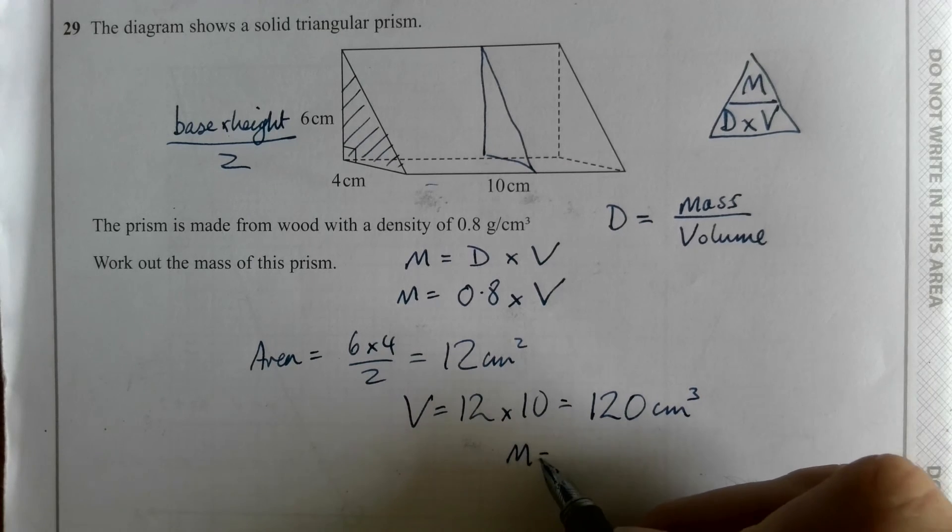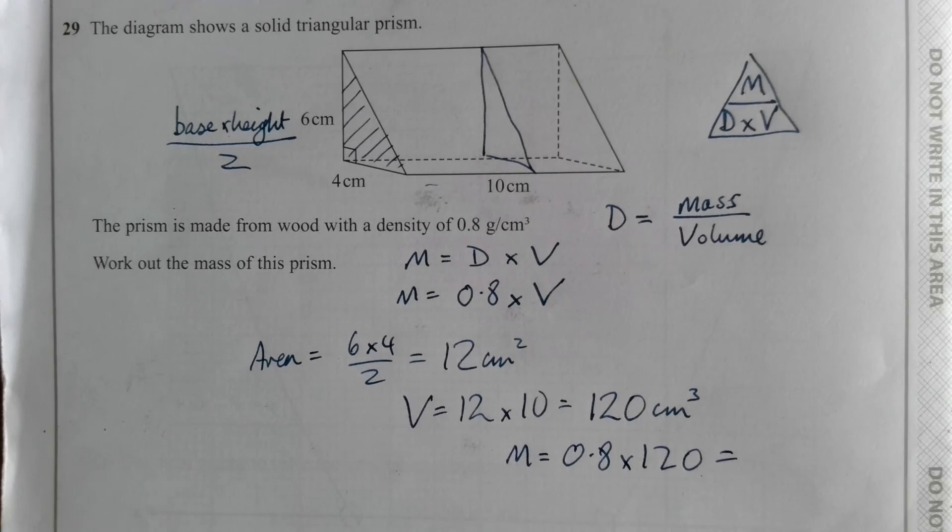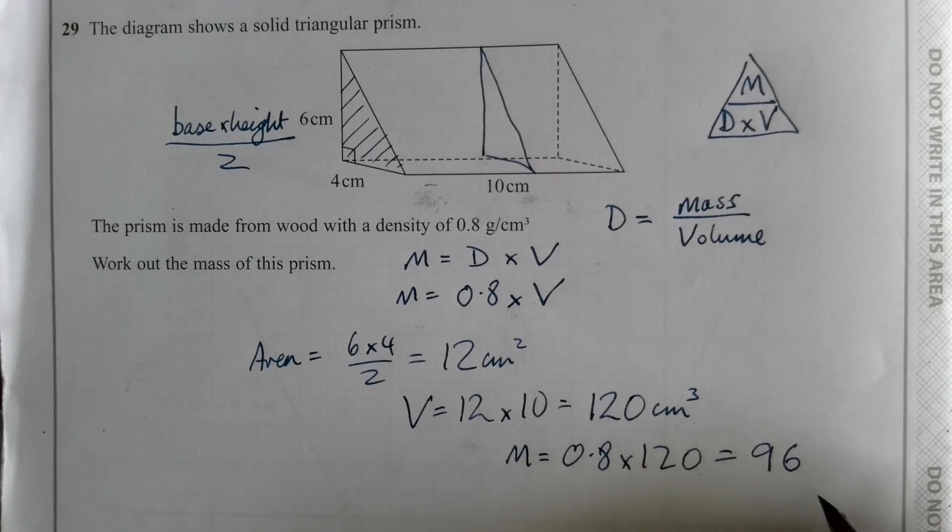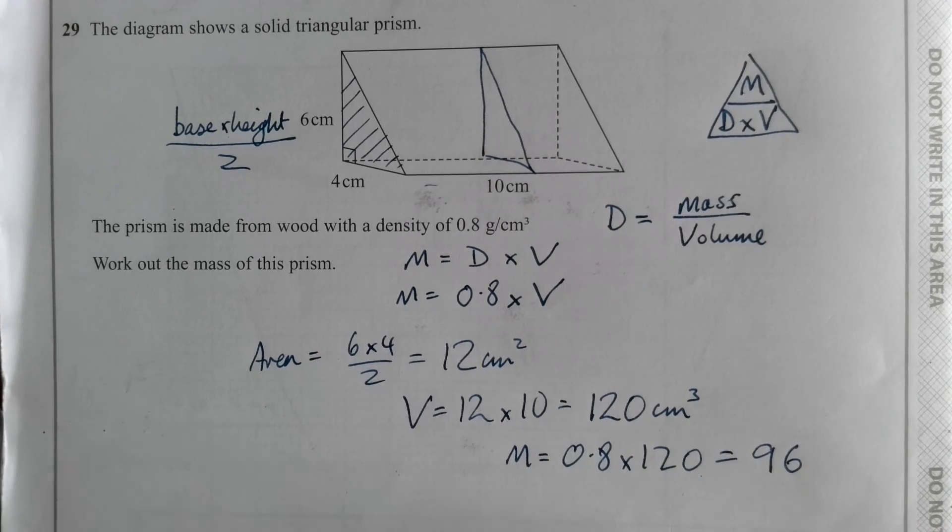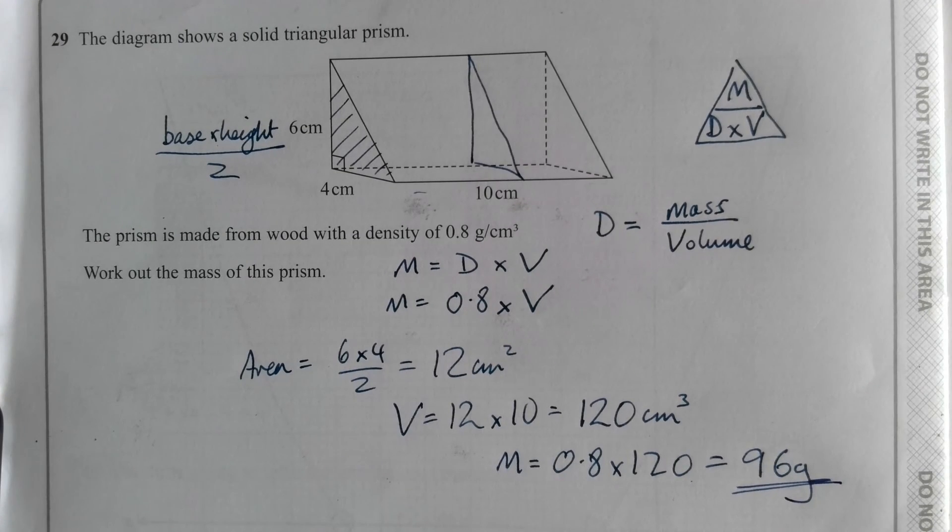So now for the maths, all we need to do is 0.8 times that volume of 120. Put that into the calculator and that should give you 96. And what are the units? They're grams. So 96 grams. And that's it.